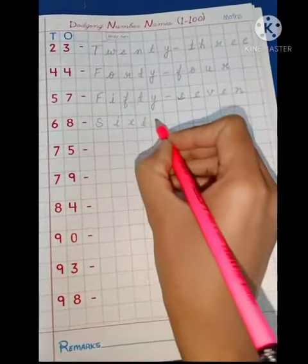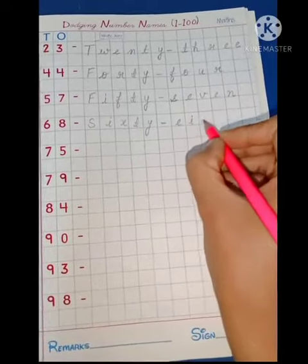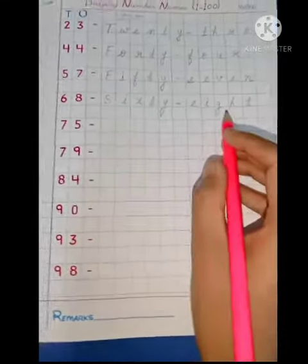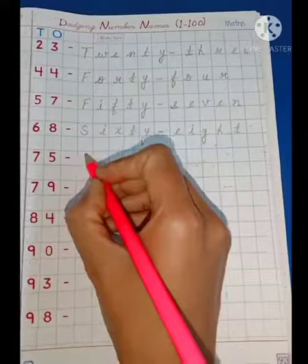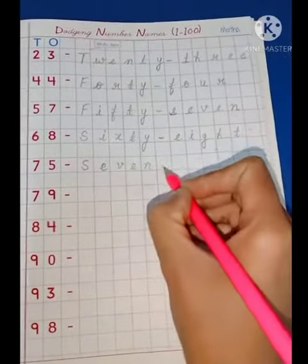...T-Y, sixty, dash, eight, E-I-G-H-T, sixty-eight. Next is 75: S-E-V-E-N-T-Y...